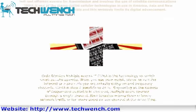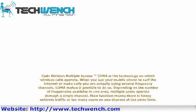Code Division Multiple Access, CDMA, is the technology on which wireless calls operate. When you use your mobile phone to surf the internet or make calls, you are actually using several frequency channels. CDMA makes it possible to do so. Depending on the number of frequencies available in one area, multiple users operate through a single channel. Slow function means there is heavy network traffic or too many users on one channel at the same time.